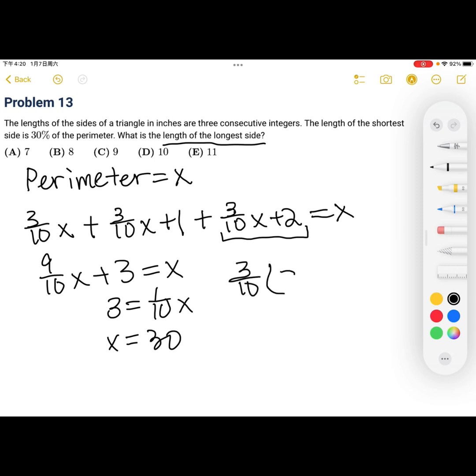Three tenths times 30 plus two. Canceling out, three times three is nine. Nine plus two, which gives us eleven. So the answer is E.